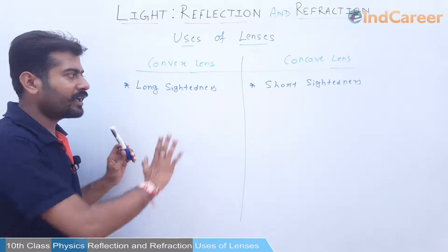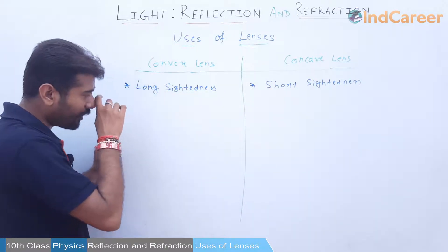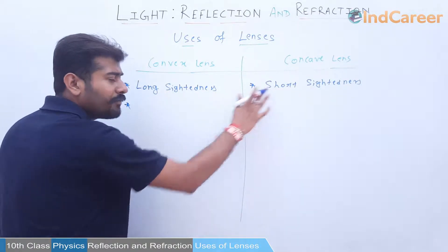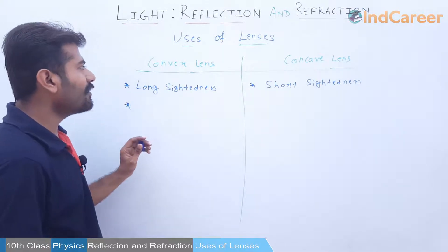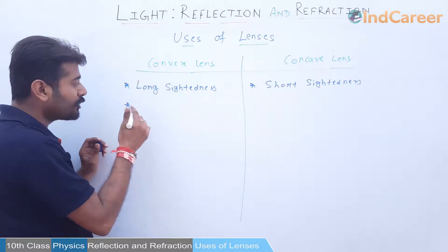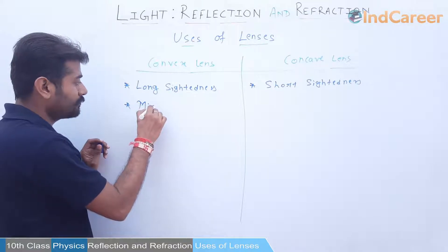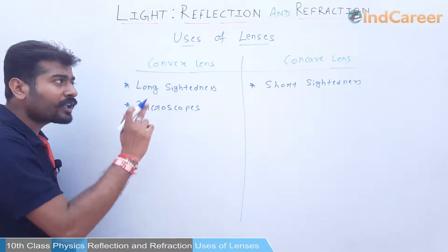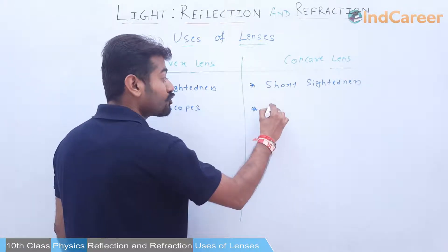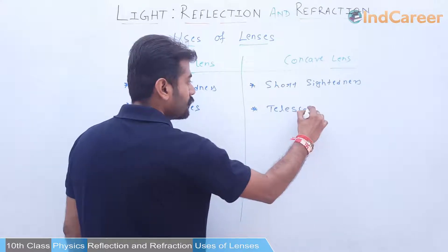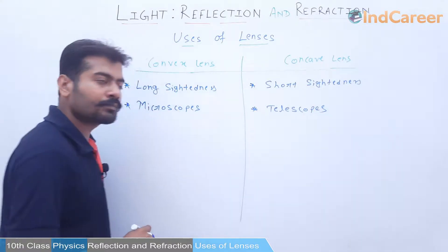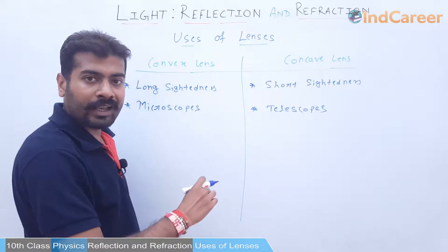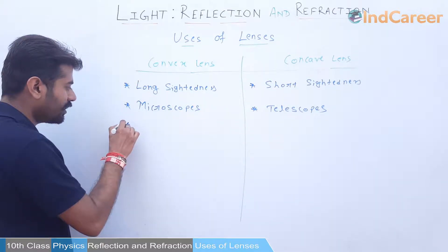In spectacles, we use convex lens to correct long sightedness and concave lens to correct short sightedness. The next application: convex lenses are used in microscopes, whereas concave lenses are used in telescopes. This is very important to remember.